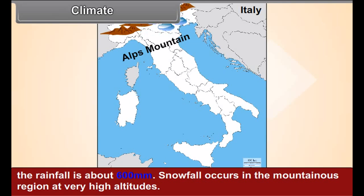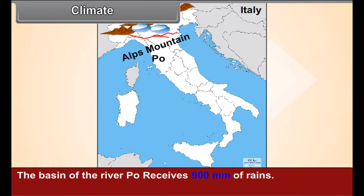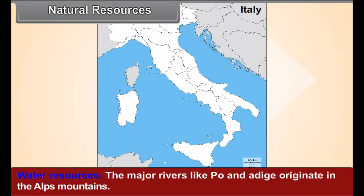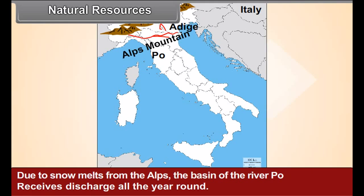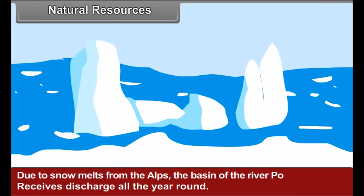Snowfall occurs in the mountainous region at very high altitudes. The basin of the river Po receives 900 mm of rain. Natural resources — water resources: the major rivers like Po and Adige originate in the Alps mountains. Due to the snow melt from the Alps, the river Po receives discharge all year round.